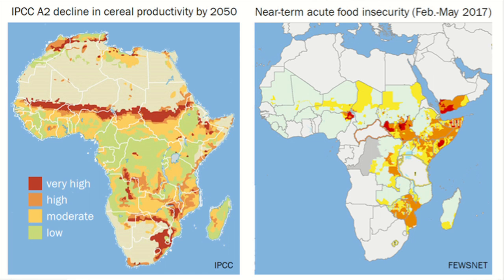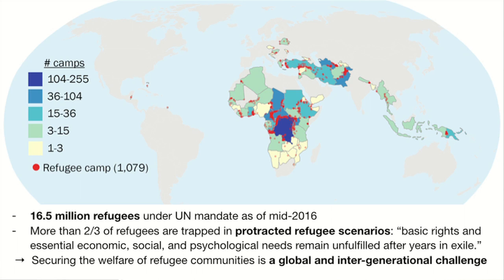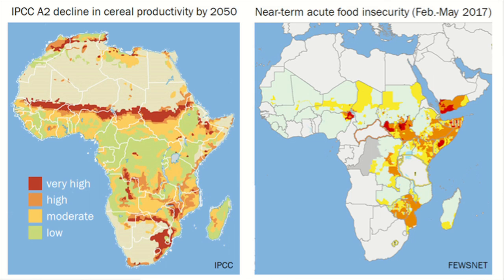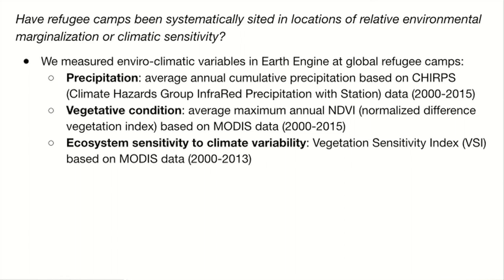We know that will become more of a challenge. Most of the refugee camps are concentrated in Central Africa, and this is also where we're expecting extreme declines in cereal productivity by most models the IPCC is generating. We don't need to wait until 2050 to see these challenges — we're already seeing acute near-term food insecurity in these same regions today. So our research question is: have these refugee camps been systematically established in locations of relative environmental marginalization or climatic sensitivity?